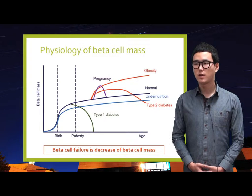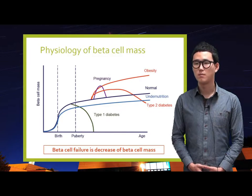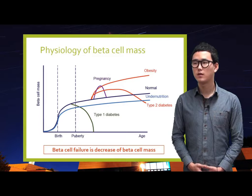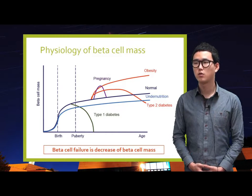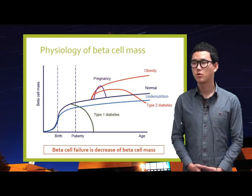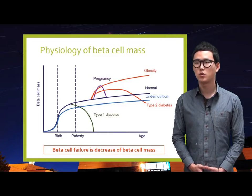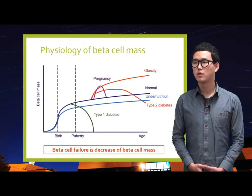The reason why beta cell failure happens is a decrease of beta cell mass. In the normal case, beta cell mass increases with age, related to insulin resistance. When people become obese, beta cell mass also increases to compensate for increasing insulin resistance. But in Type 2 diabetes, beta cell mass may grow slightly in the early stage but rapidly reduces after that. Interestingly, pregnancy shows a dramatic change in beta cell mass in a very short time, making it a good target for studying beta cell mass variation.